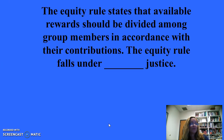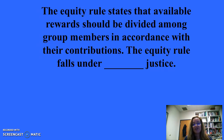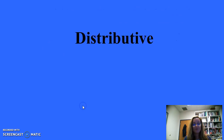Fairness and group decision making for 100: The equity rule states that available rewards should be divided among group members in accordance with their contributions. The equity rule falls under distributive justice — a rule stating that rewards should be given based on how much each group member has contributed. If people receive more rewards than seem justified by their contributions, we perceive this as unfair.